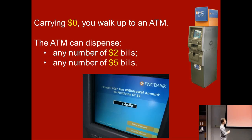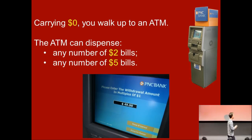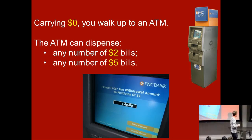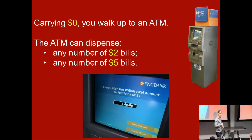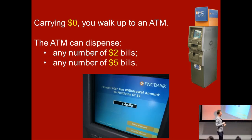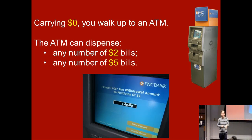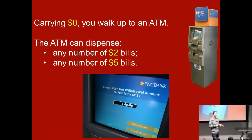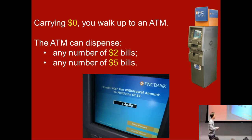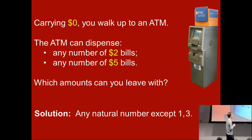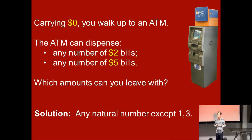This may seem like an advertisement for PNC Bank. I chose them because some of their ATMs can dispense multiples of $1, which is awesome because most ATMs give you multiples of $20. You ask for $50 and they can't do it. But some can dispense even $1 bills, so you can take out $64. Let's imagine this semi-realistic ATM which can give out $2 bills and $5 bills.